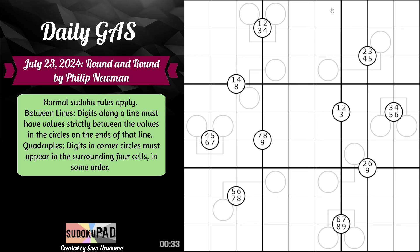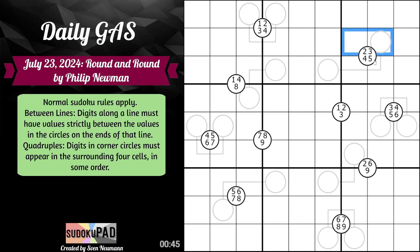Kind of getting a little bit of an x-windmill vibe here — we'll see if that's how it plays out. But in any case, 1, 4, 2, 3. The 2, 3 actually creates a pointing pair here, pointing at this 2, 3, 4, 5 quadruple. Which means that this must be 2, 3. Which means that this must be 4, 5 here.